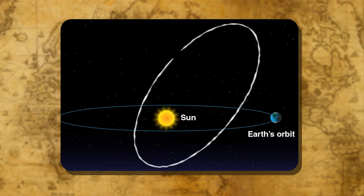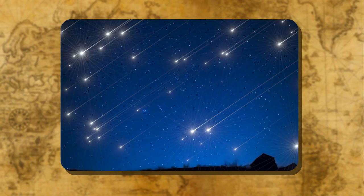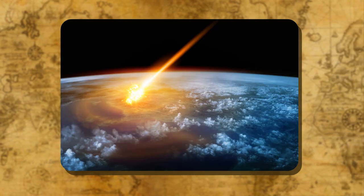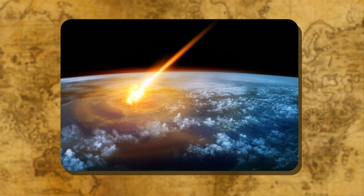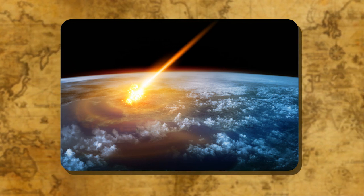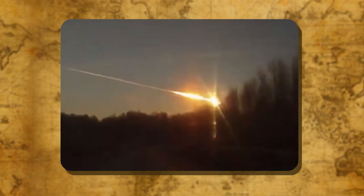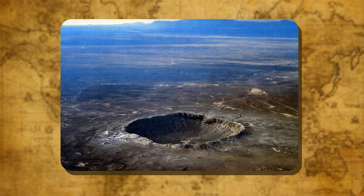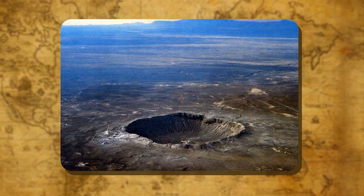Meteoroids: The small pieces of rock which move around the sun are called meteoroids. Meteoroids are also called shooting stars because when they enter the Earth's atmosphere they start burning, causing a flash of light as they fall. They could cause great damage if they fall directly on the Earth's surface. Meteor fragments that reach the ground are known as meteorites. A large meteorite creates a crater when it falls. About 50,000 years ago, a meteorite created a huge crater called Meteor Crater in Arizona, United States of America.